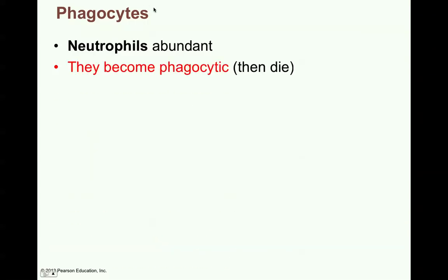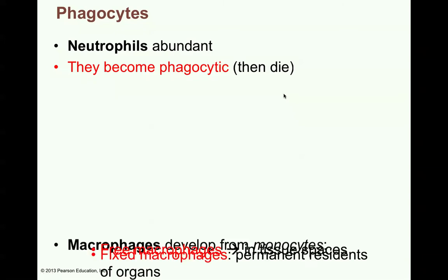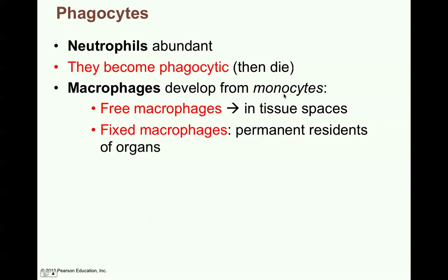Neutrophils are the most abundant type of phagocyte. These neutrophils actually become phagocytic and then they will die — they do their job and then disappear. Macrophages then develop from monocytes. Free macrophages are just hanging out, dwelling in the tissue spaces. There are also fixed macrophages that are permanent residents of particular organs — like soldiers stationed out in the field, monitoring for any advancement of the enemy.